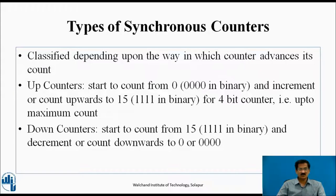Types of Synchronous Counters are classified depending upon the way in which a counter advances its count. Up Counters start to count from decimal 0 (binary 0000) and increment upward towards decimal 15 (binary 1111) for 4-bit counters, up to maximum count. Down Counters start from decimal 15 (binary 1111) and decrement downwards to decimal 0 (binary 0000).